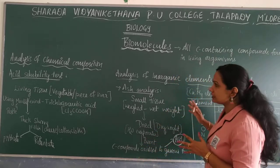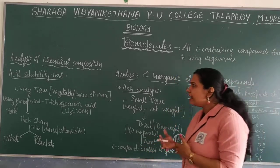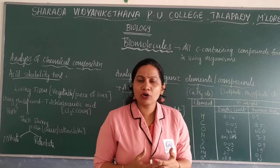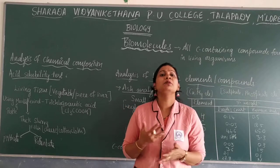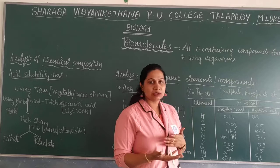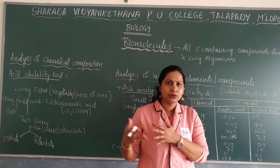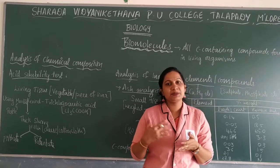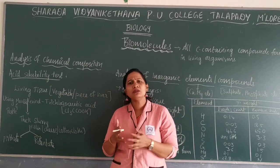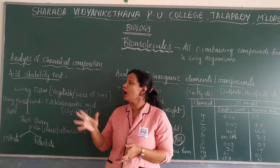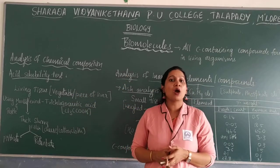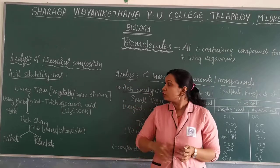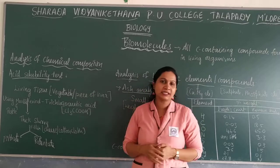Now, regarding certain chemicals — how do we analyze the chemical composition of a living tissue? For example, you know that egg consists of more protein, egg yolk contains fat, and starch is majorly consisting of carbohydrate. But how do we analyze the chemical composition of a living tissue? For that, first we have the acid solubility test.